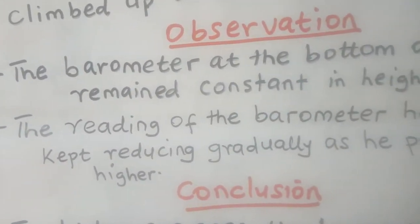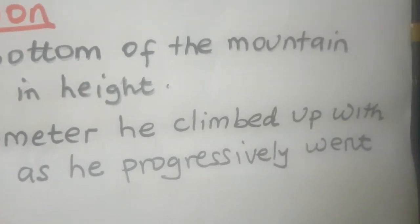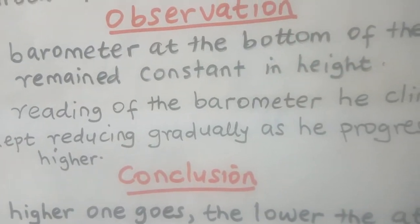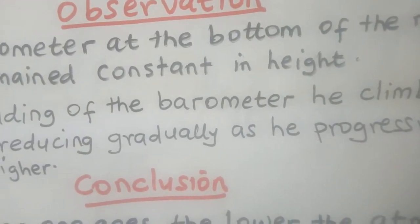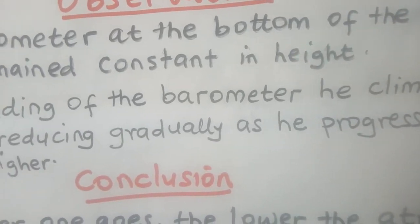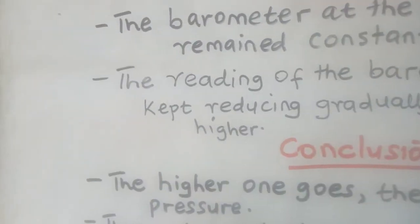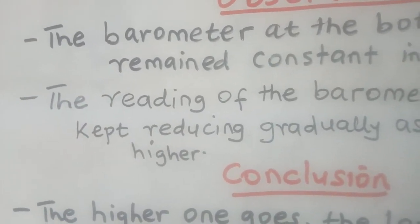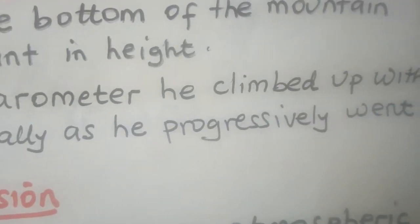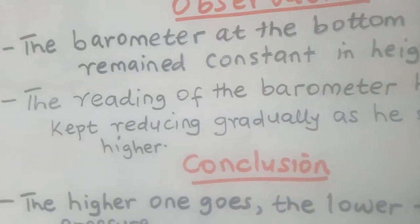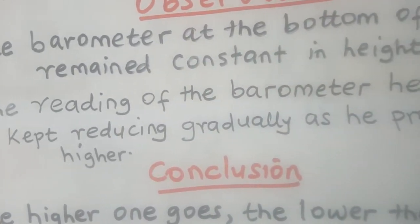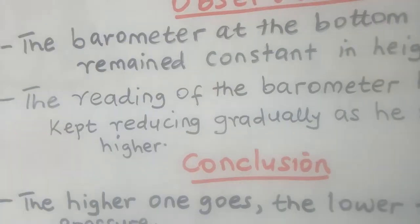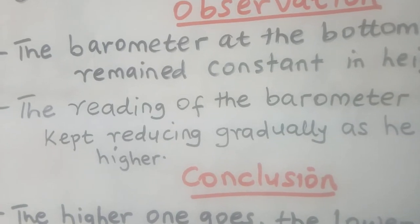Observation one: the barometer at the bottom of the mountain — the one he left there — the reading remained constant in height. The reading of the barometer he climbed with kept reducing gradually as he progressively went higher, as he kept on moving up the mountain.